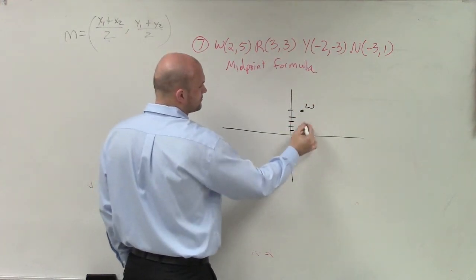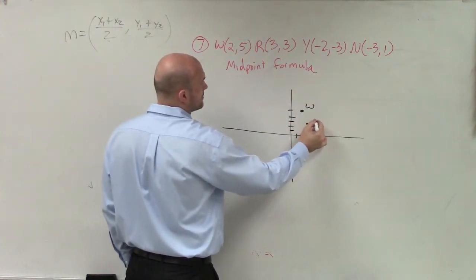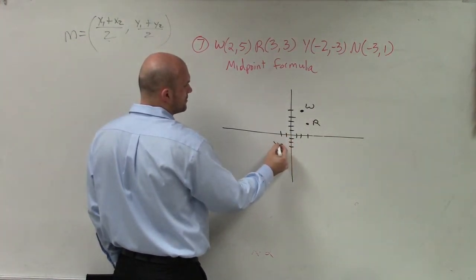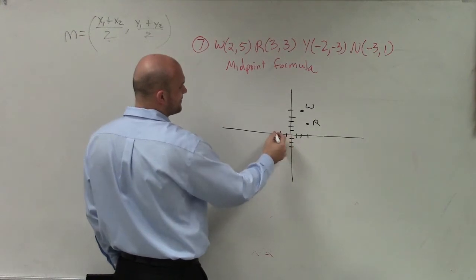R is at (3, 3). Y is at (-2, -3). And N is at (-3, 1).